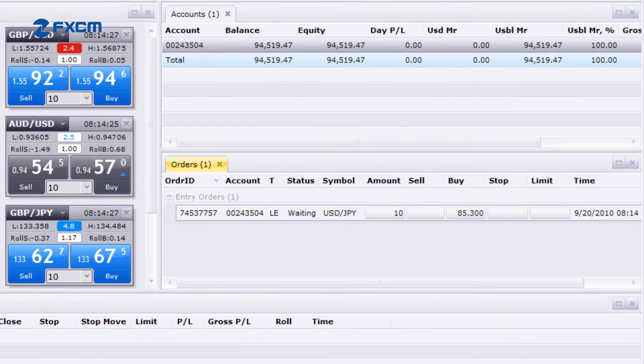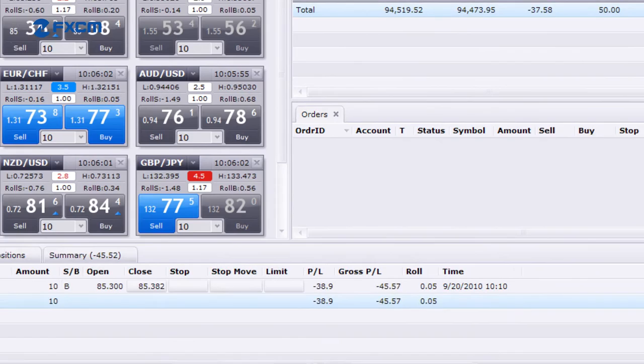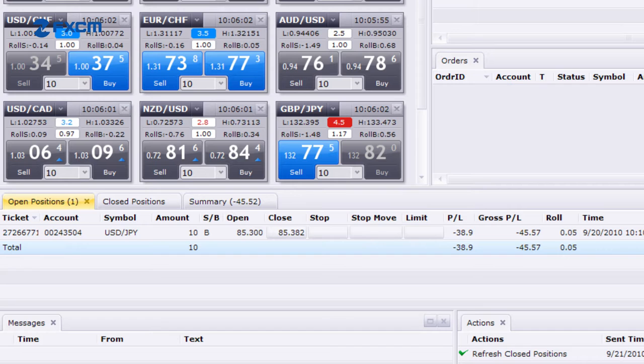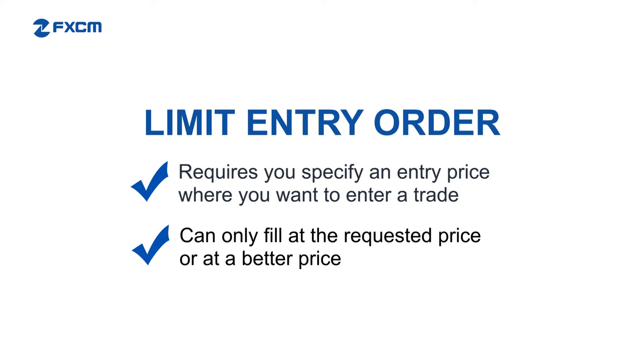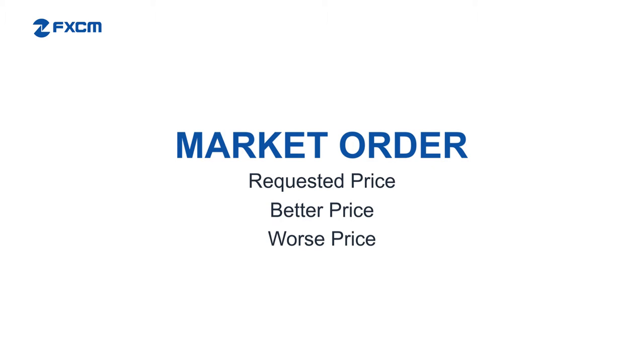If the market falls to 85.3, the order will trigger automatically and enter you into a buy trade, on one condition. And this leads to the second way in which a limit entry order differs from a market order. A limit entry order can only fill at the requested price or at a better price, where a market order can fill at the requested price, at a better price, or at a worse price.